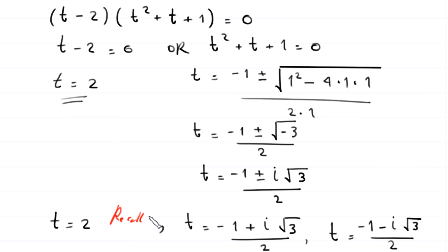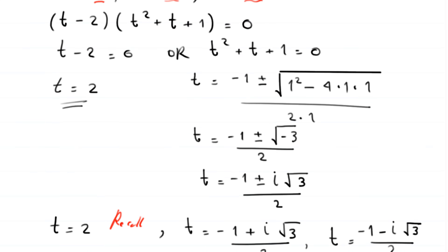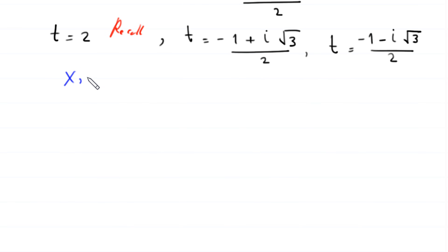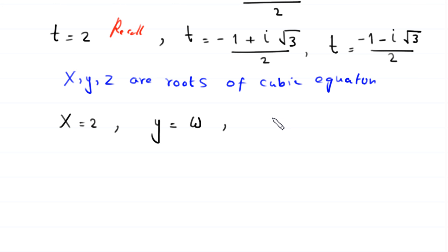Recall that x, y, and z are the roots of the cubic equation. So x = 2, y = (-1 + i√3)/2, which is a complex cube root of unity, also called omega (ω), and z = (-1 - i√3)/2, which is omega squared (ω²).